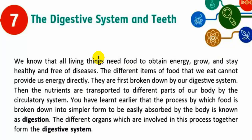Hello students. In this video we are going to discuss chapter number seven: the digestive system and teeth. All living things need food to obtain energy, grow and stay healthy and free of diseases. The different items of food that we eat cannot provide us energy directly — they are first broken down by our digestive system, then the nutrients are transported to different parts of our body by the circulatory system. The process by which food is broken down into simpler form to be easily absorbed by the body is known as digestion. The different organs involved in this process together form the digestive system.